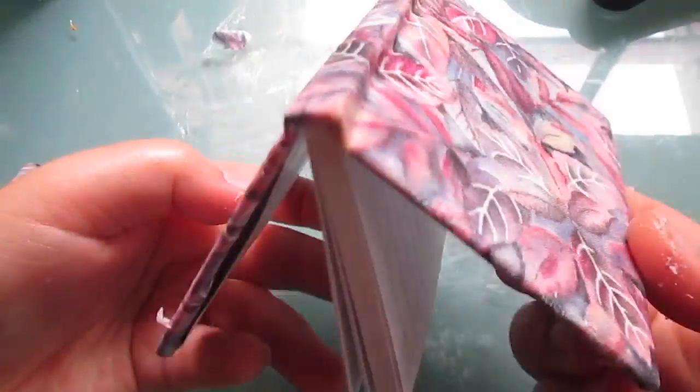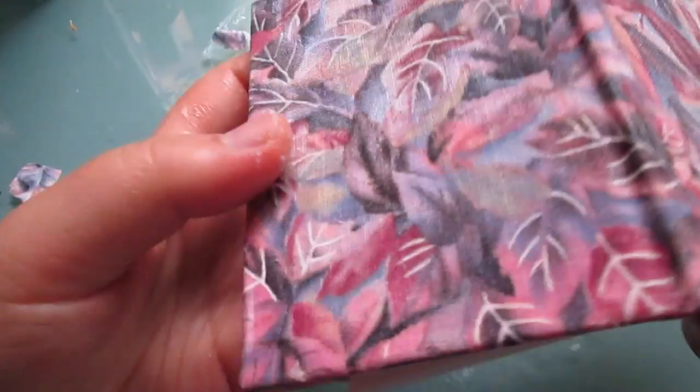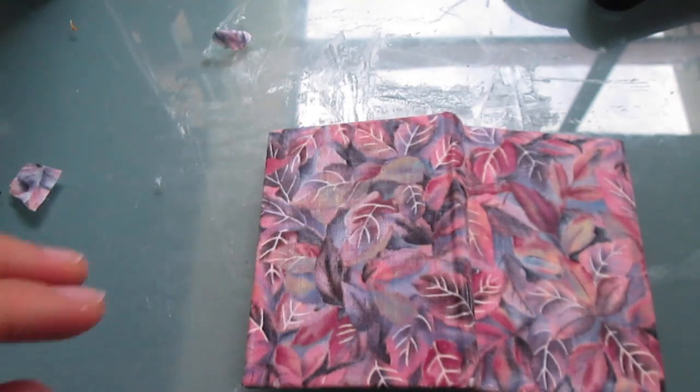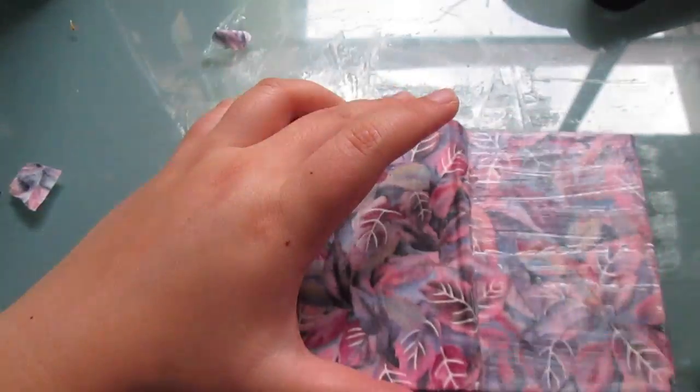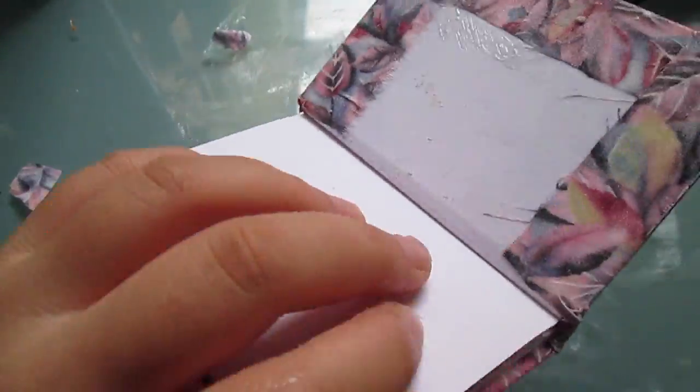Ta-da! It's basically finished, but before we allow it to dry you just want to add a little bit more Mod Podge. Just slather Mod Podge all over that notebook. This really helps the fabric to set onto the notebook.